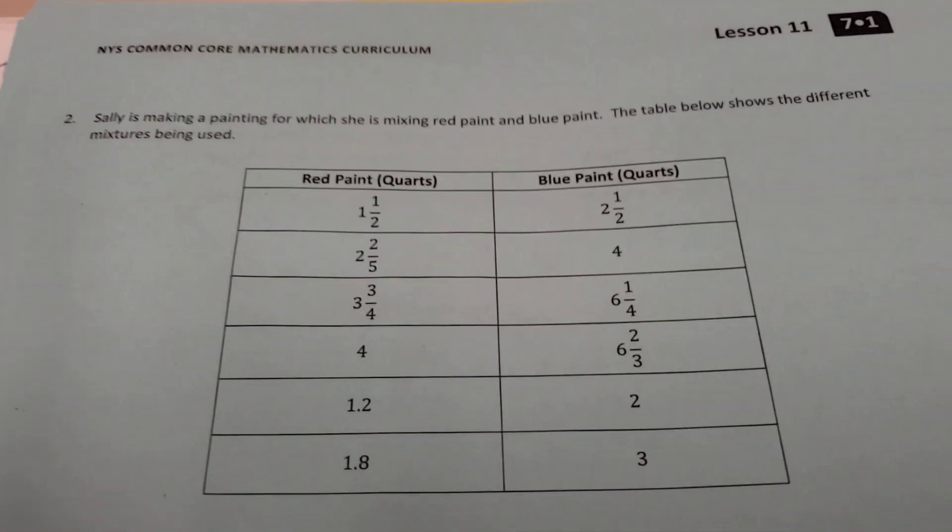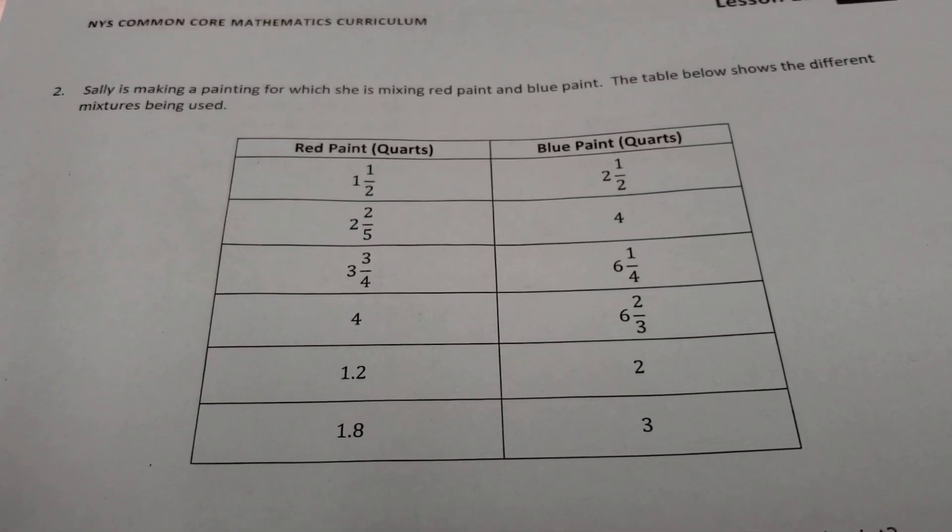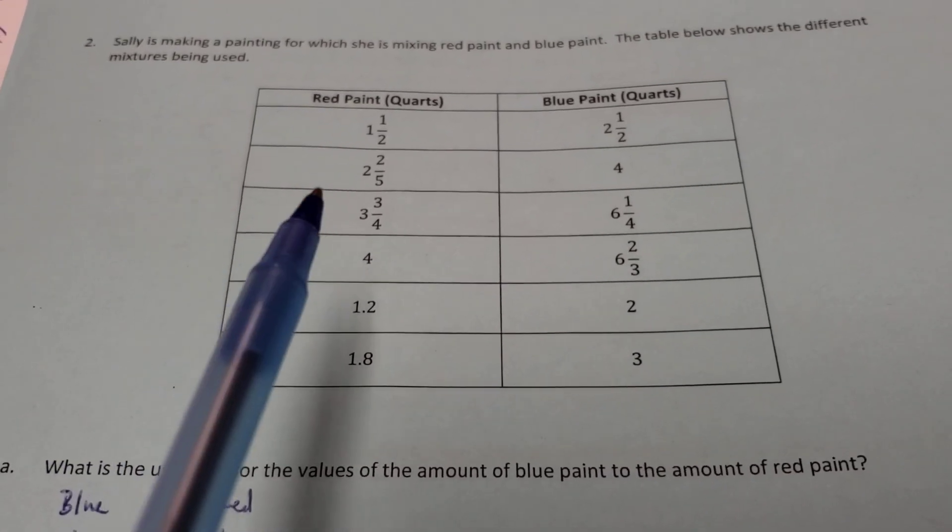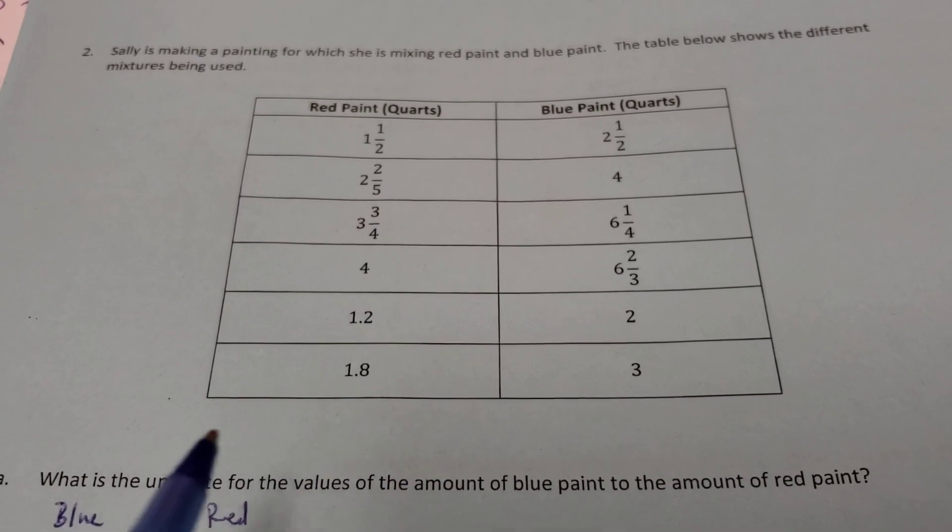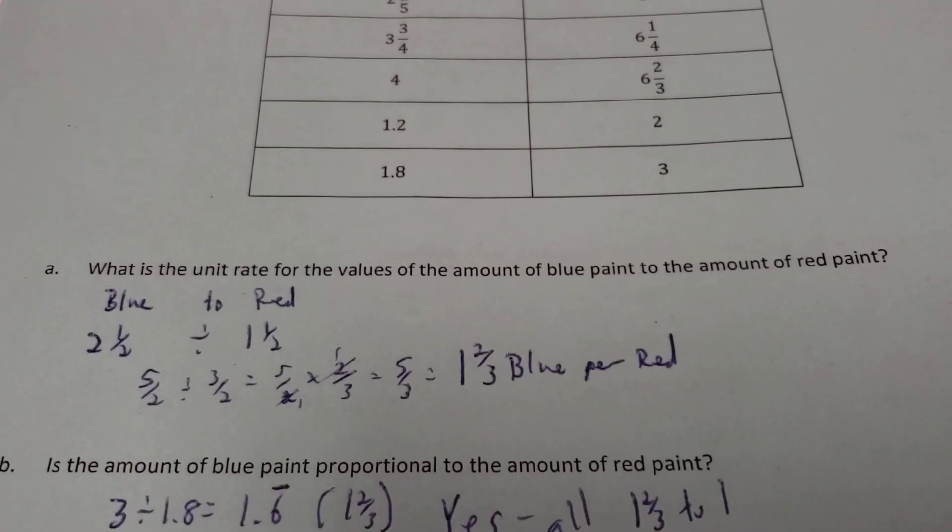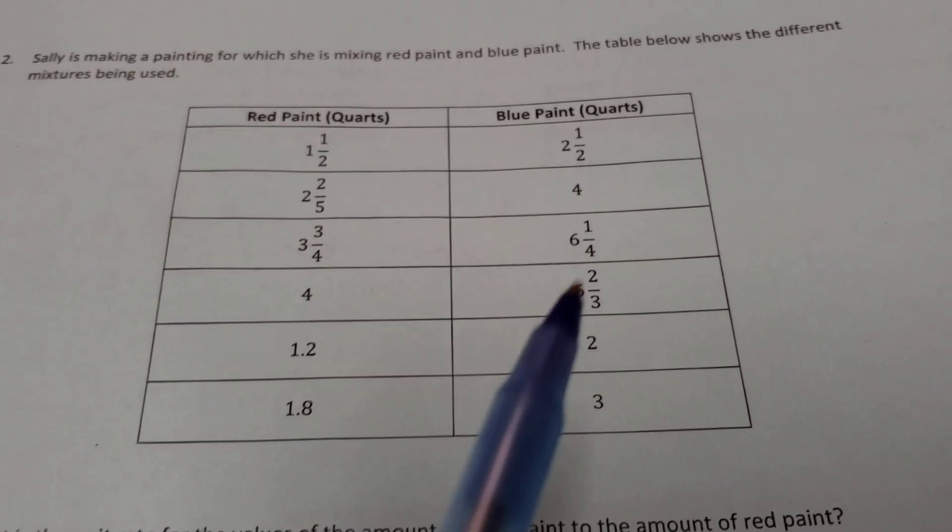All right, let's get turned to our next page. All right. It says, Sally is making a painting for which she is mixing red paint and blue paint. The table below shows the different mixtures being used. All right. So, we have all our information here, red to blue, all the way through. Some of them are fractions. Some of them are decimals. What's the unit rate for values of the amount of blue paint to the amount of red paint? So, I focus, like, on blue to red.